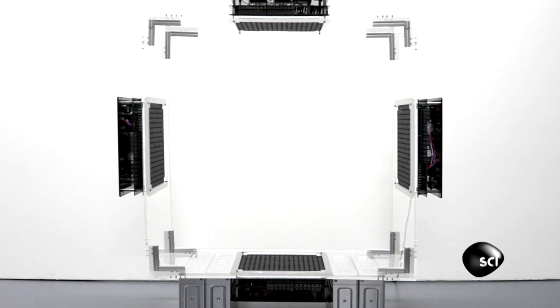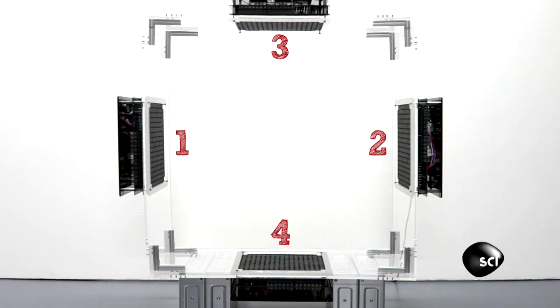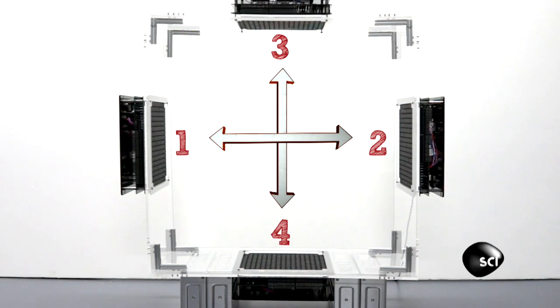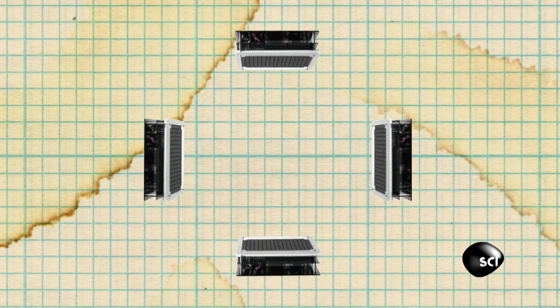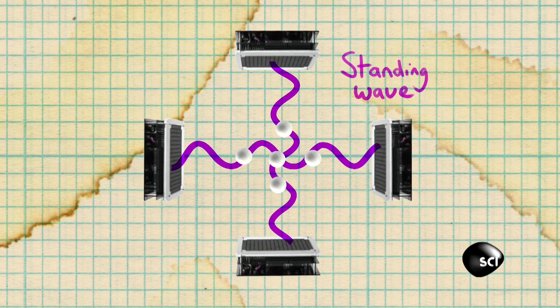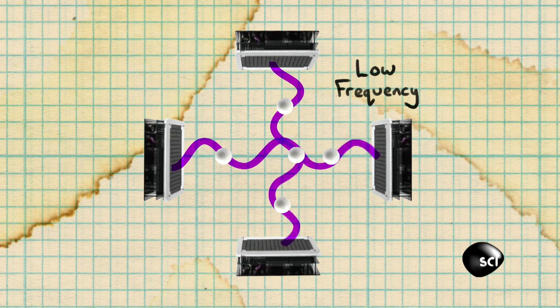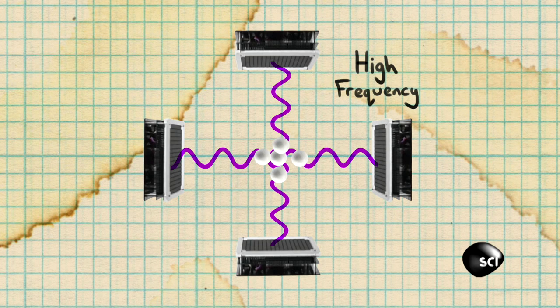They have these four speakers, and two speakers are facing each other in one direction, two speakers are facing each other in the other direction. So the opposite facing speakers create the standing waves, and what they can do is they can actually manipulate the frequency. That moves the nodes, and as the nodes move, the polystyrene balls also move.